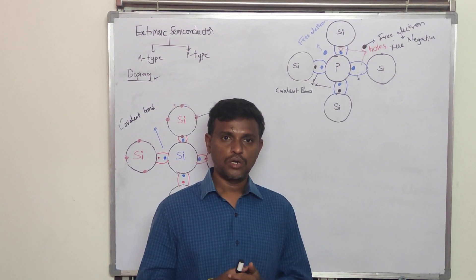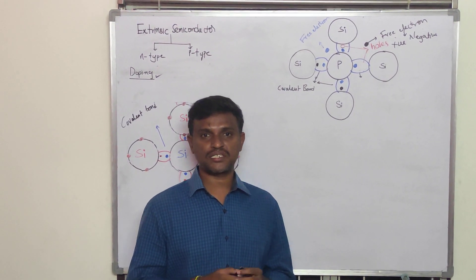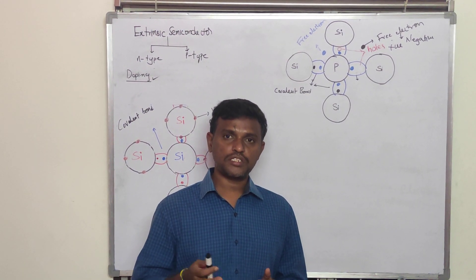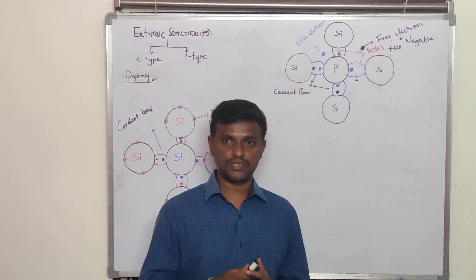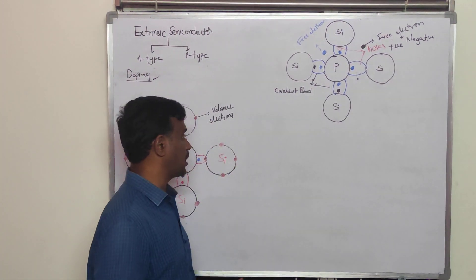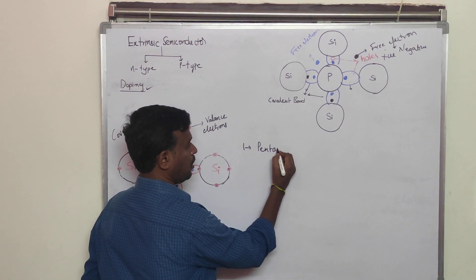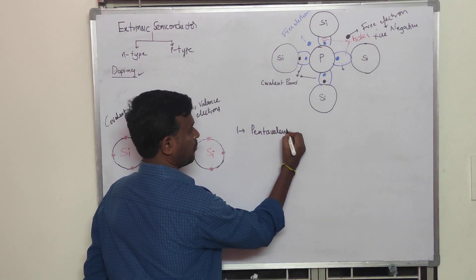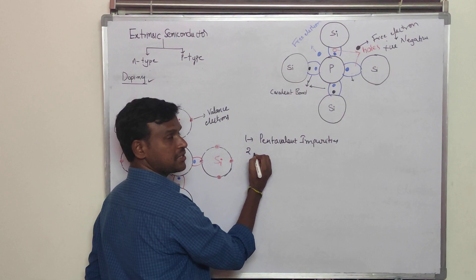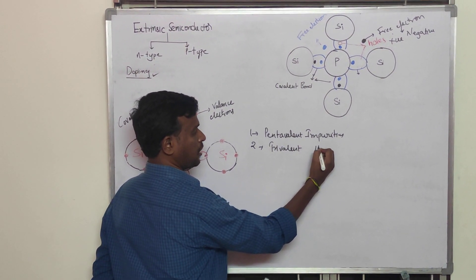What is the doping process? The doping process is the process of adding impurities to an extrinsic semiconductor to improve its electrical conductivity. The impurities that are added are basically two types: one is pentavalent impurities and the second one is trivalent impurities.